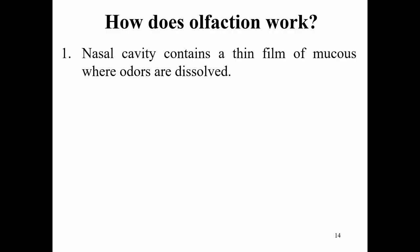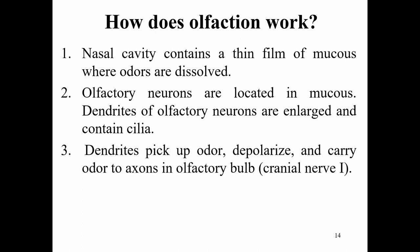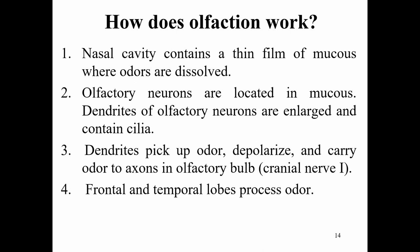Our nasal cavity contains a thin film of mucus where odors are dissolved. Odors are present in gaseous phase and when they stick to the mucus they are detected. Olfactory neurons are located in the mucus; dendrites of olfactory neurons are enlarged and contain cilia. The dendrites pick up the odor, depolarize, and carry the signal to axons in the olfactory bulb via cranial nerve one. The frontal and temporal lobes process the odor.